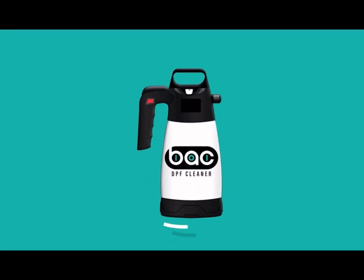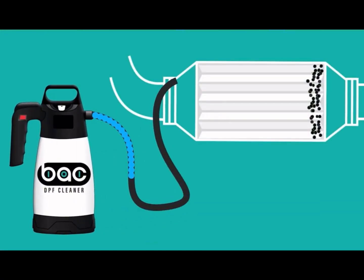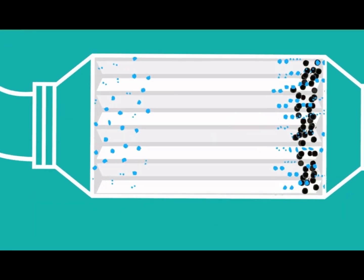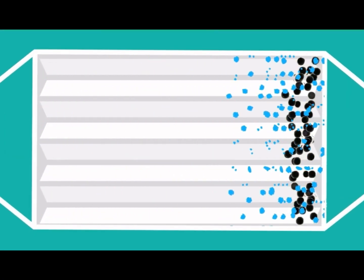BAC 101 is the first two-part system offering a total cleaning solution that not only removes the soot and ash deposits, but also cleans the oil residue within the DPF system, effectively taking the cleaning process to a whole new level.